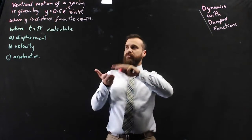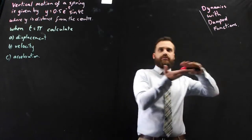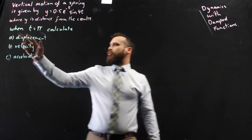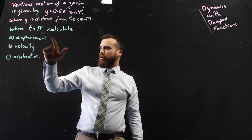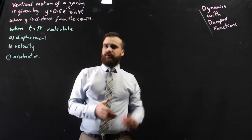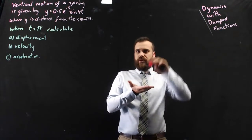So that's what our vertical motion of a spring is. You hit the bump and then you keep driving. So when time equals pi, calculate the displacement, the distance of the spring from the centre.